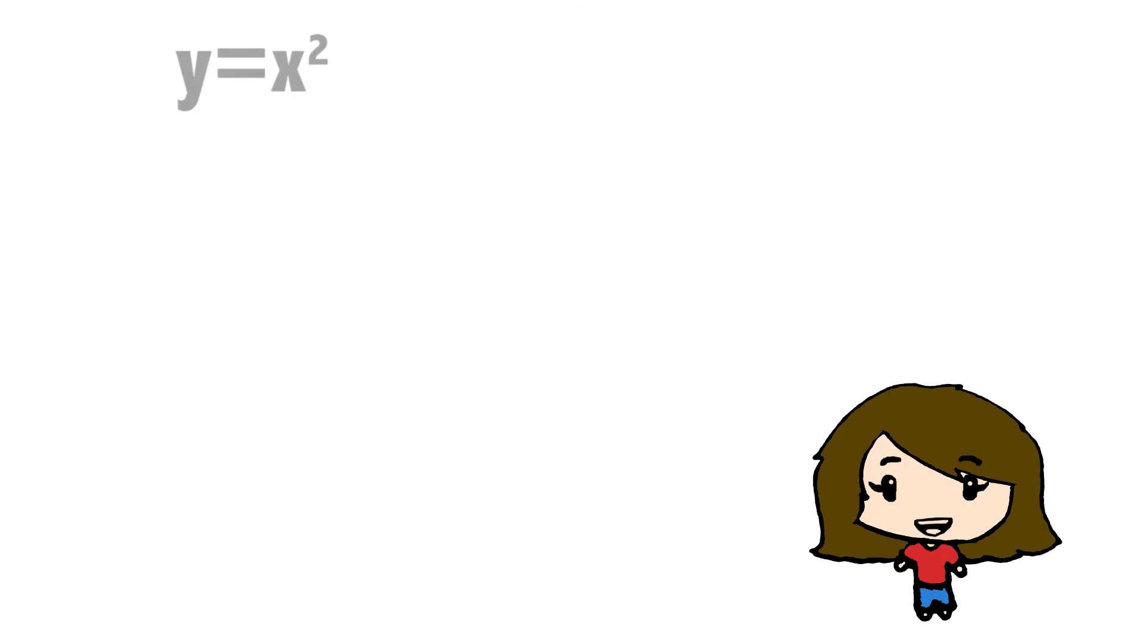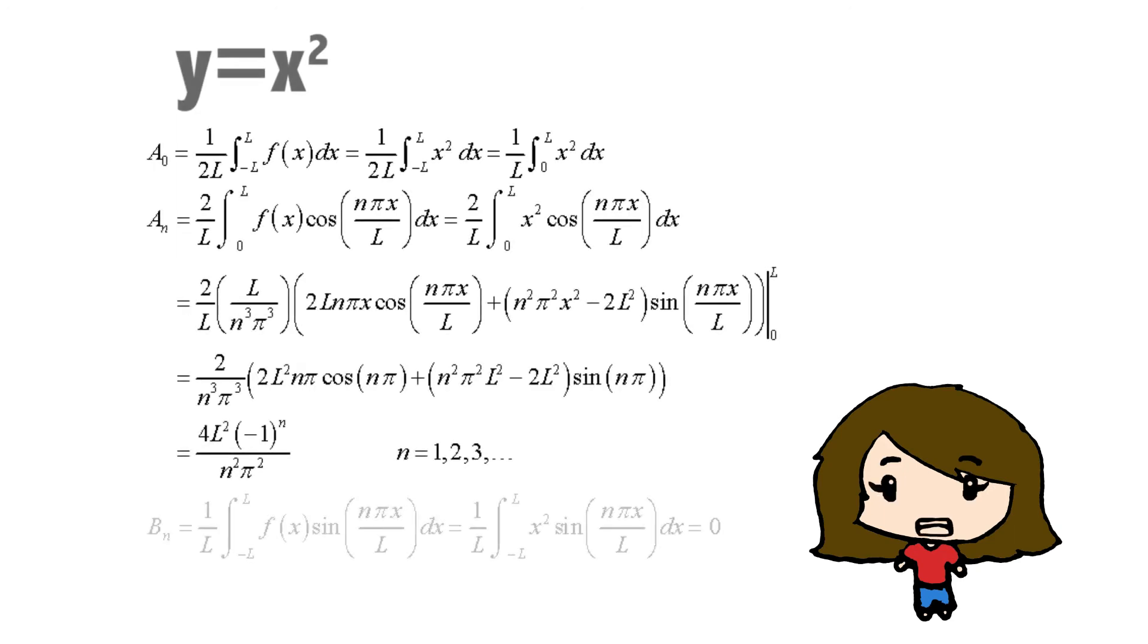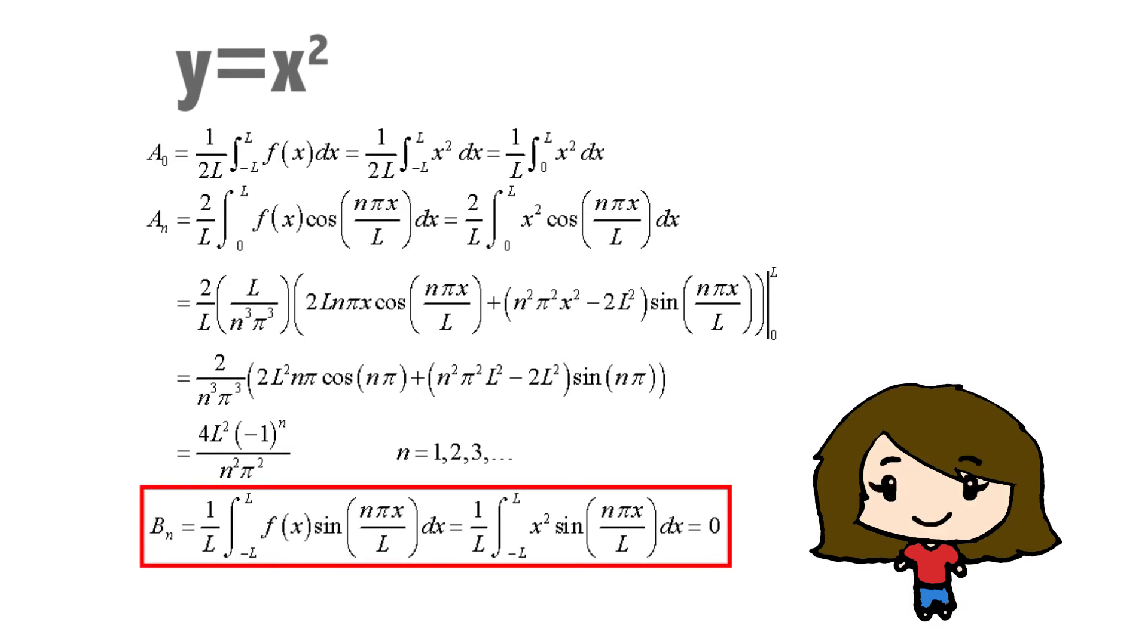For example, suppose an even function y equals x squared, calculate its Fourier coefficient, we will find that bN always be 0.